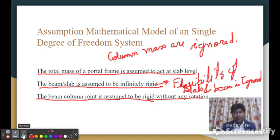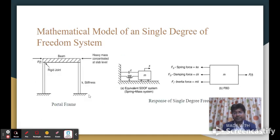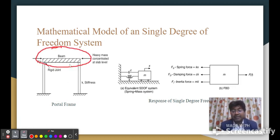By following the above assumptions, see what is happening here: the beam weight is only considered at beam level. The stiffness will only be provided by the columns. By these assumptions we can make a mathematical model like a spring and mass system.